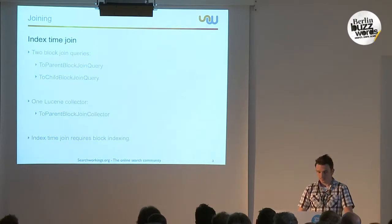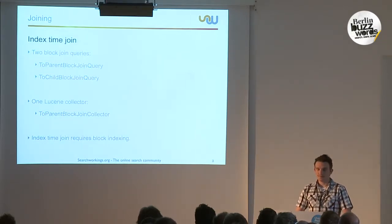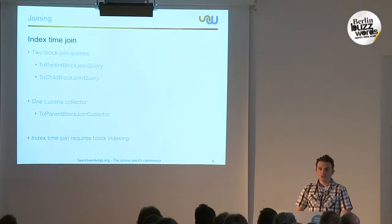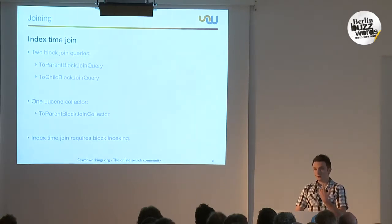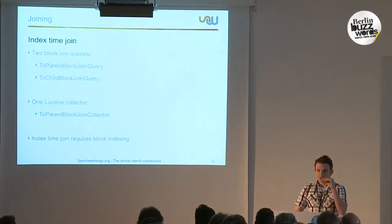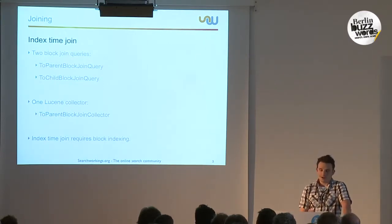The index-time joining support consists of two queries and one Lucene collector. The first query is the ToParentBlockJoinQuery — it allows you to query for the children and return the parent documents as a result. The ToChildBlockJoinQuery allows you to query on the parent and get the children back. These two queries return either parents or children as hits, and the collector enhances this by allowing you to have a relation hit per result — the parent and the matching children together in the same hit.